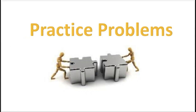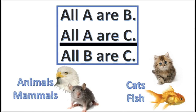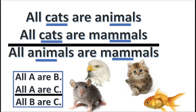Let's begin with a couple of practice problems. Here's your first argument form — this is an invalid argument form. What you want to do is substitute the terms using animals, mammals, cats, and fish. Anywhere you see an A, put one of these terms there. The answer is: all cats are animals, all cats are mammals, therefore all animals are mammals.